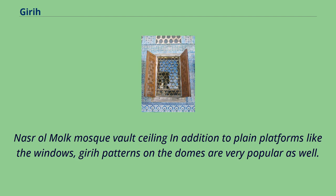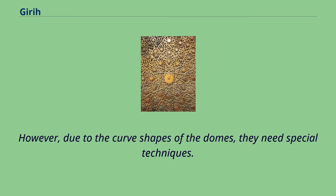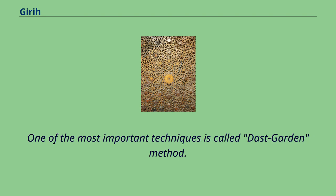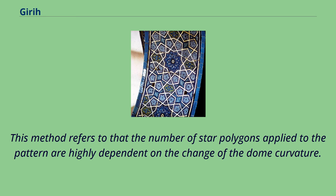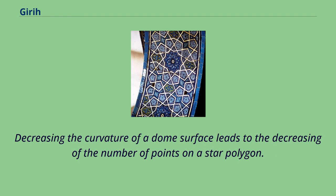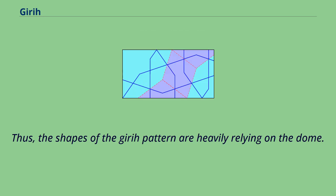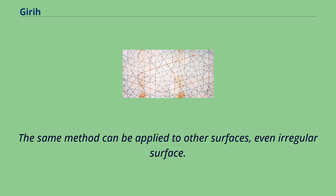In addition to plain platforms like windows, girih patterns on domes are very popular as well. However, due to the curved shapes of domes, they require special techniques. One of the most important is called the Das Garden method, which refers to how the number of star polygons applied to the pattern is highly dependent on the change of dome curvature. Decreasing the curvature of a dome surface leads to decreasing the number of points on a star polygon, and the same method can be applied to other surfaces, even irregular ones.